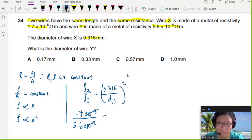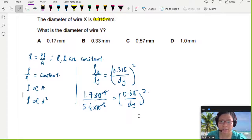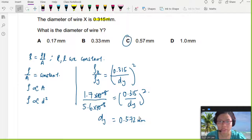In fact, this one immediately you can cross out already. So 0.315 over dY squared. If you press calculator a bit, you will find that your dY is equal to 0.572 mm because 0.315 is mm. So the answer will be C.